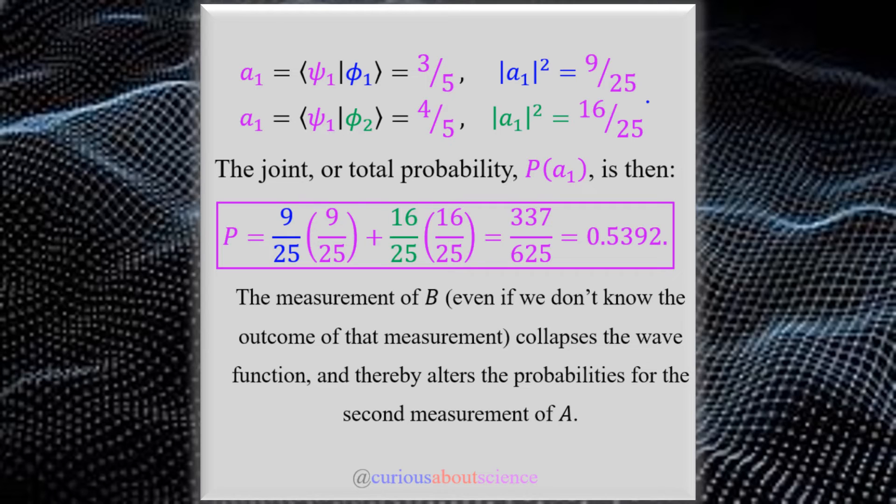All right, so if then we measured and we're trying to find out what A1 was back again, we note here that we have to just be careful because we only have the probability of A1 occurring in phi 1 with the 3 5ths probability. So square it, that gives us our 9 over 25 for the case of A1 with respect to the eigenstate phi 1.